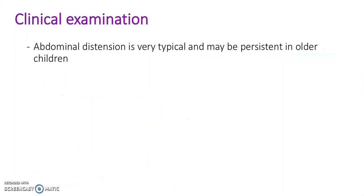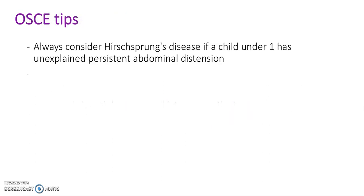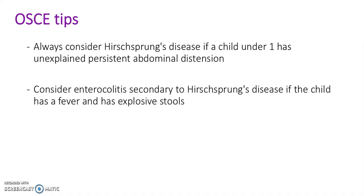Clinical examination. On clinical examination, the abdomen will be distended — that's very typical — and may be persistent in older children too. There may be fever, and diagnosis is mainly based on history, investigations, and exclusion of other potential causes. Tips for OSCE: always consider Hirschsprung's disease if a child under 1 has unexplained persistent abdominal distension. Consider enterocolitis secondary to Hirschsprung's if the child has a fever and has explosive stools.